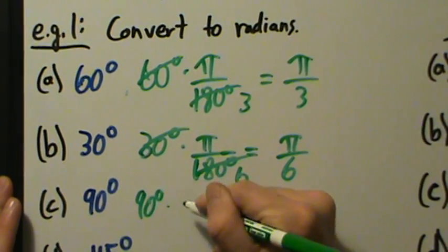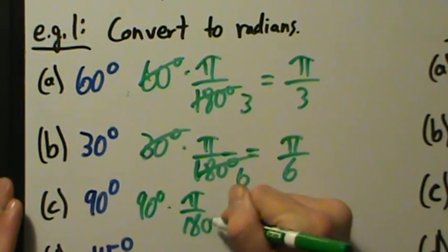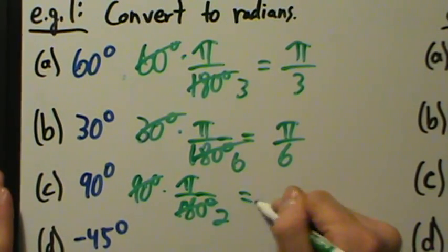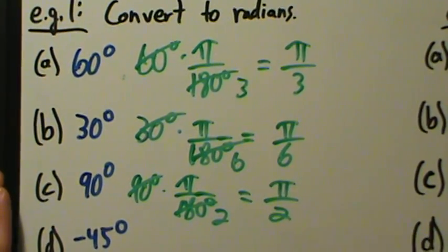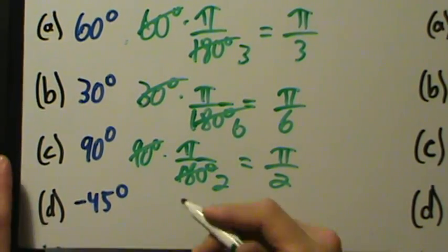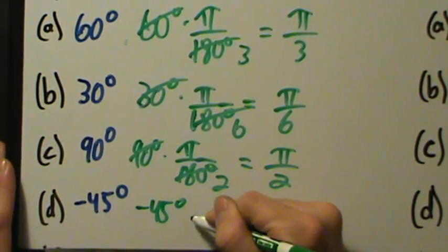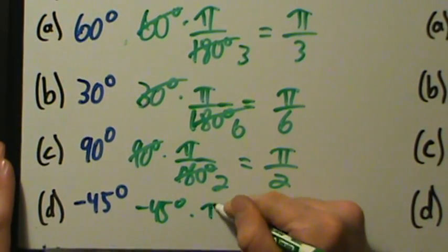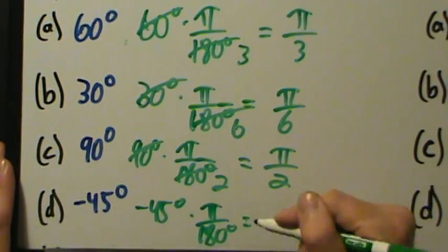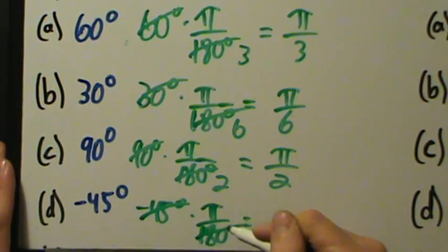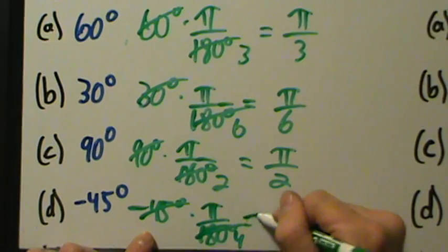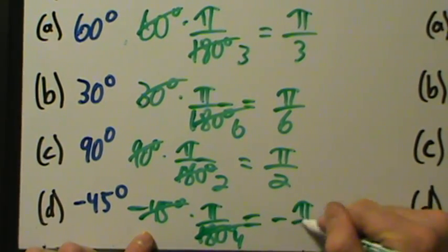For 90 degrees, multiply 90 degrees by pi over 180 degrees: 90 goes into 180 twice, so this is pi over 2 radians. For negative 45 degrees, take negative 45 degrees times pi over 180 degrees: 45 goes into 180 four times, so this equals negative pi over 4.